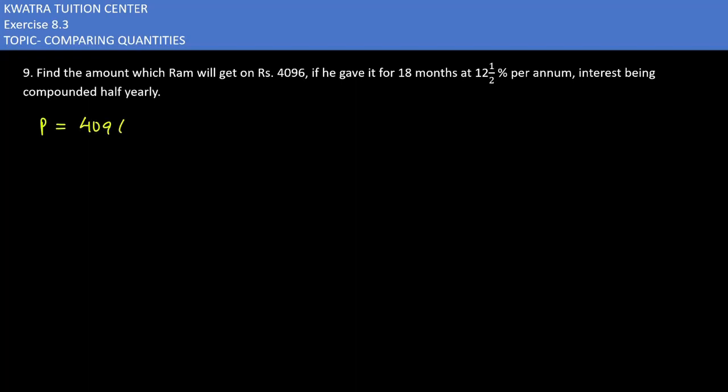Principle given to us is 4096. Rate given to us 12½% and change this to 25/2%. And then the time is given as 18 months. Now 18 months you will convert it into years first.